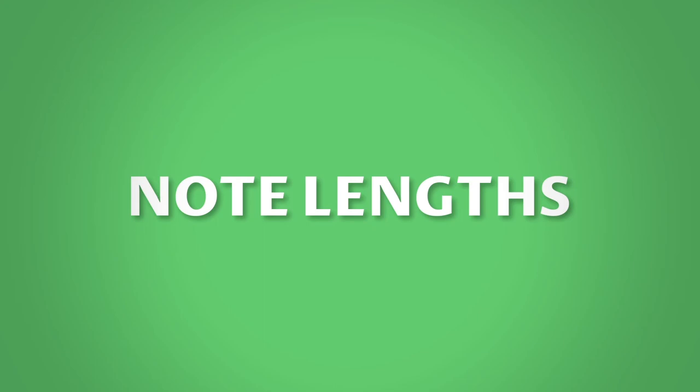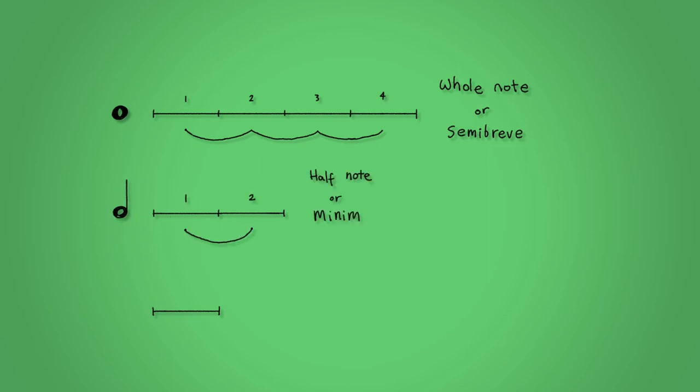Note lengths. How can you tell the length of a note? Well, that's easy. The shape of the note tells you how long to play it. A whole note, or if you're in the UK called a semibreve, is an empty circle and lasts four counts. A half note or a minim adds a stem and lasts two counts. And lastly, a quarter note or a crotchet fills in the circle and lasts one count. There are other note lengths but let's not worry about those for now.